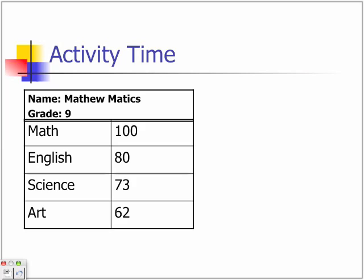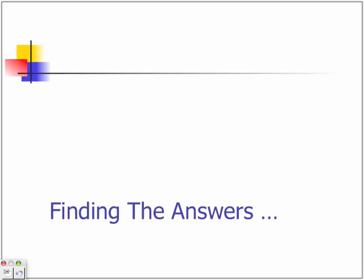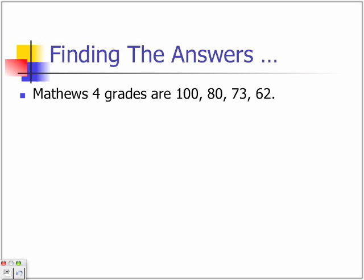There's an activity. Matthew recently got his report card and he wants to find the mean, median, and mode of his grades. So let's find the 3 things. His grades are 100, 80, 73, and 62.